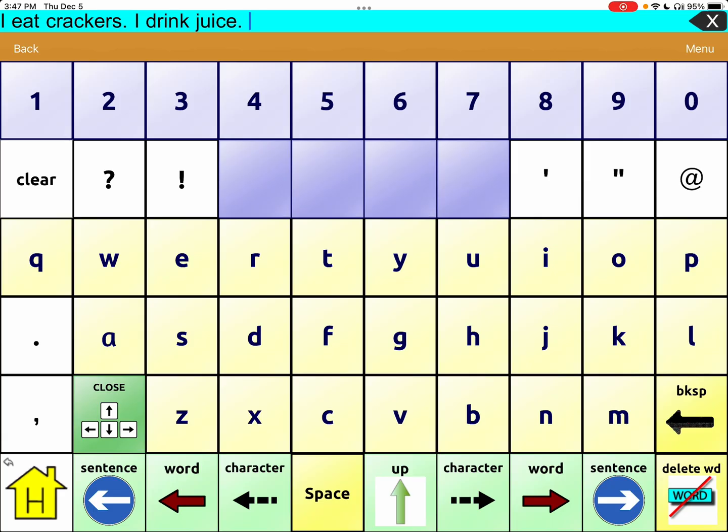So let's say I wanted to go back a word. Let's say I wanted to add, I meant to put I drink orange juice, not just I drink juice. So you're going to tap word and it's going to go right in front of juice and then you can either go select the icon of orange or you can type orange and space. I drink orange juice. Great.